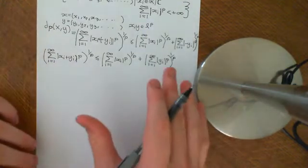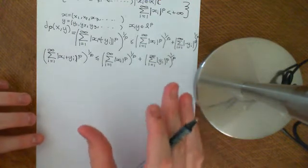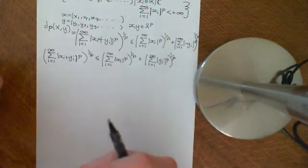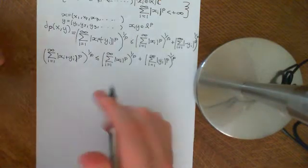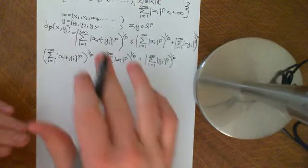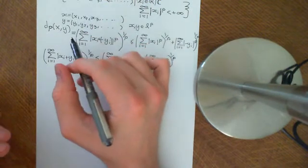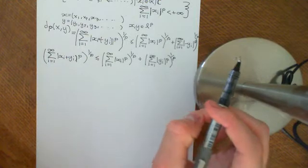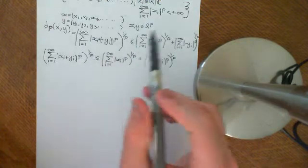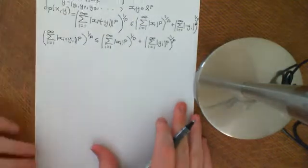Now what we want to do is understand why this metric space is a complete metric space. But before we do that, we need to understand limits in this metric space a bit more. If we have a sequence of sequences — i.e., a sequence in this metric space — what is it going to converge to? We're going to find that, just like in the case of L infinity, sequences of sequences converge term-wise if they converge in this metric space.